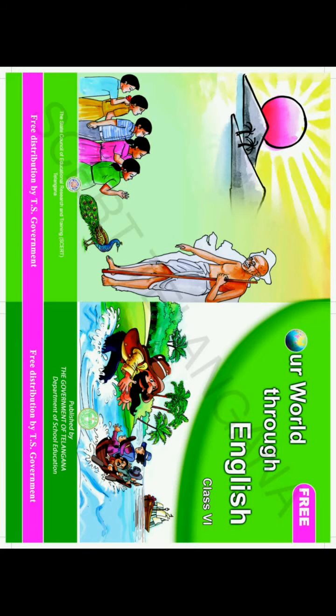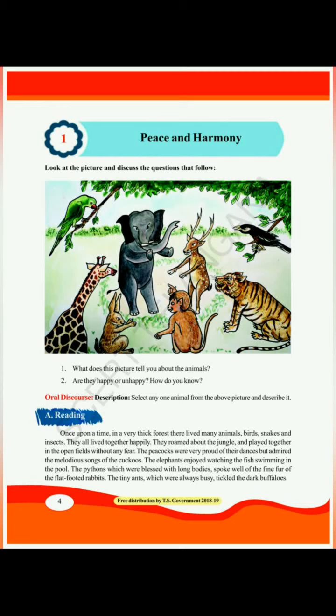Let's start our lesson. The first lesson is Peace and Harmony. Peace means being in a calm state — there is no quarrel, there is no noise. Harmony means living together peacefully without any quarrel or argument. This is a story about animals who lived peacefully, but when a jackal entered the jungle, the harmony was disturbed and they quarreled. The story is about how they got united again and regained their peace and harmony.